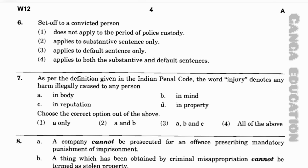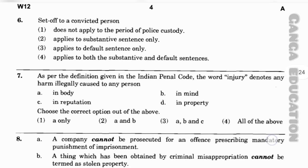Question number 7: As per the definition given in the Indian Penal Code, the word 'injury' denotes any harm illegally caused to any person — (A) in body, (B) in mind, (C) in reputation, (D) in property. The correct answer is option 4 — all of the above — that is, in body, in mind, in reputation, and in property.